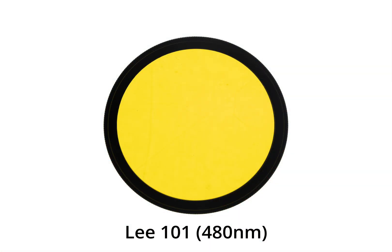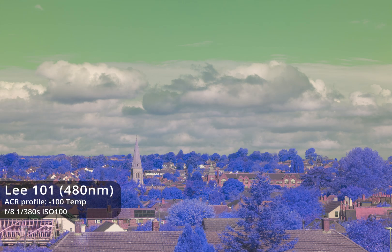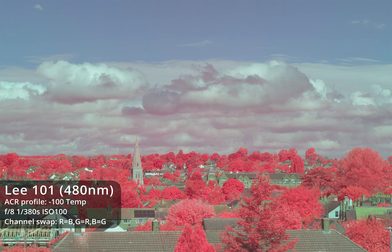The Lee 101 yellow filter is a gel filter designed for lighting use. I layer it with a cheap UV filter to keep it rigid in the filter ring. It's the closest available replacement I could find for the old Lee Number 12 yellow minus-blue gel filter designed for black and white photography, and it cuts light approximately below 480nm. The Number 12 yellow filter is traditionally used with the EIR channel swap — blue channel to red, red to green, green to blue — giving an aerochrome-style image with blue sky and red foliage.